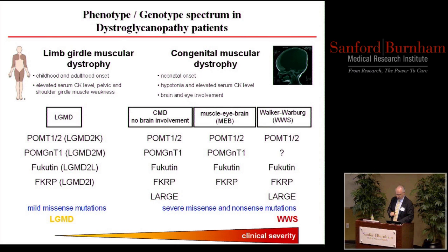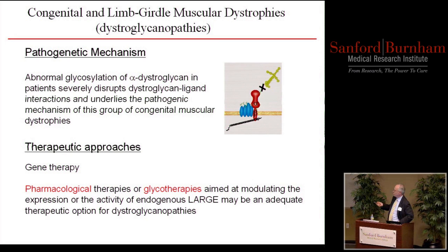Overall, the pathogenic mechanism for this group of muscular dystrophies is that abnormal glycosylation of alpha-dystroglycan disrupts the ligand interactions between dystroglycan and laminin. In the CNS, dystroglycan binds neurexin, another LG-domain-containing protein, so there's probably evidence its interaction is important at synapses. This disruption of the interaction is the basic cause for the muscular dystrophies.